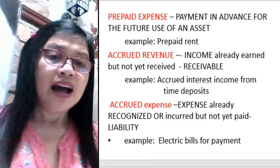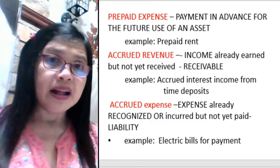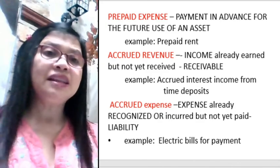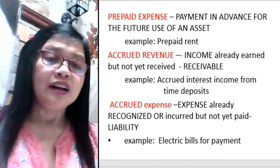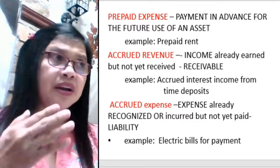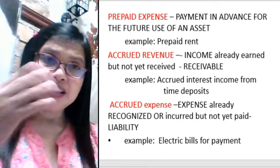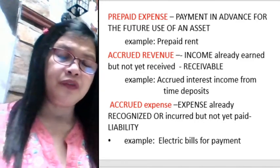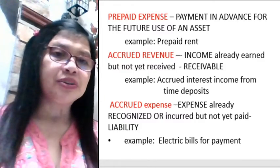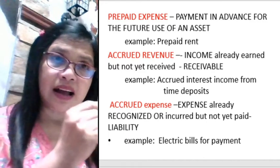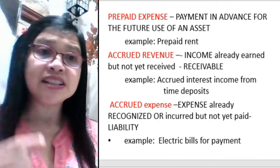An accrued expense is an expense already recognized or incurred but not yet paid, so it is a liability account. A very good example is an electric bill. For example, today is January, and the bill for January will not reach us until a month later. So we have already recognized an accrued expense for electricity even though we have not yet paid for it.